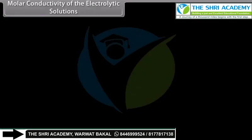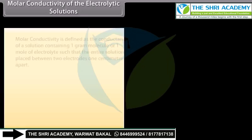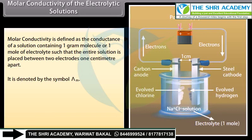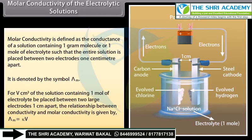Molar Conductivity of Electrolytic Solutions: Molar conductivity is defined as the conductance of a solution containing 1 gram molecule (1 mole) of electrolyte such that the entire solution is placed between two electrodes 1 cm apart. It is denoted by the symbol λ_m. The relationship between conductivity and molar conductivity is given by: λ_m = κ × V, where V is the volume of solution containing 1 mole of electrolyte.